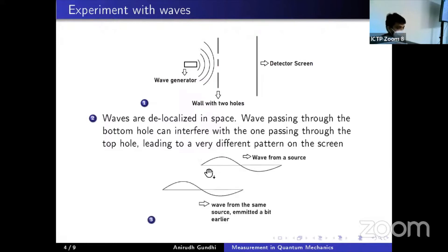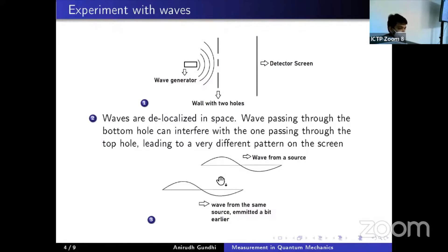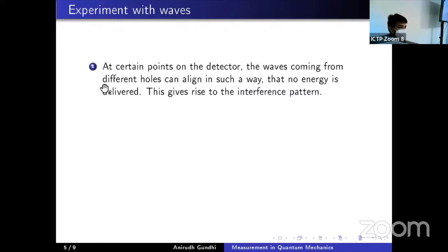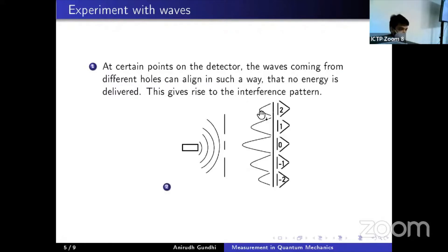By interference, imagine a source emits two waves, the bottom wave emitted slightly earlier than the top wave. If the top wave is emitted at t=10 seconds and the bottom at t=5 seconds, adding the two waves together can show the positive displacement of the top wave completely cancelled by the negative displacement of the bottom wave, leading to zero net displacement. Since the detector is sensitive to intensity — mathematically the square of the net wave displacement — there will be points on the screen where zero intensity is recorded. At certain points, waves from different holes align such that no energy is delivered, giving rise to the interference pattern.